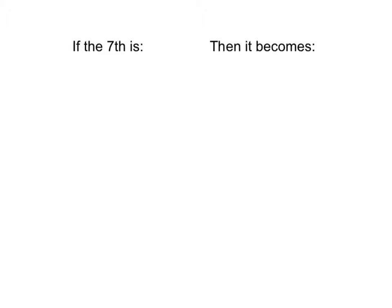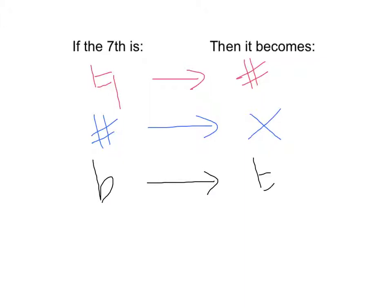So what we've learned here is that if the note that you have to raise, the 7th note, if it is natural, just plain old plain Jane, then it becomes sharp. If it already is sharp, then it becomes, when you raise it, it becomes a double sharp, which is an X. And the only other option is, if it was flat, originally, then to raise that, it becomes a natural. And that is how you draw a minor harmonic scale. Ta-da!